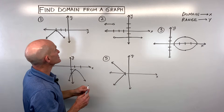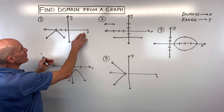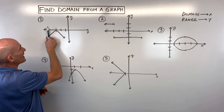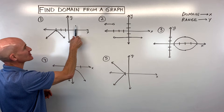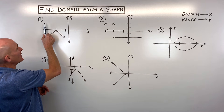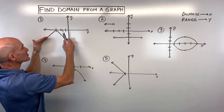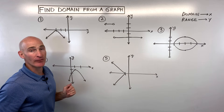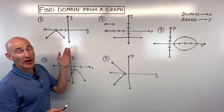Let's take a look at this first example. When I look at the domain, what I do is I take a pencil and scan from left to right — I call this the horizontal direction or the x direction. I scan from left to right and I see it's crossing the graph, and it looks like this graph is going to the left and the right forever and ever. So that tells me the x's can be anything — all real numbers.